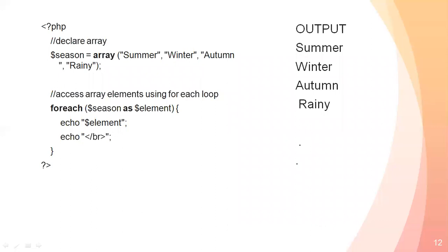Let's look at this example. This is our PHP tag. Here I am declaring the array: $season equals to array with values spring, summer, winter, autumn, and rainy — all in double quotes. I took the array values and assigned them to the array named $season.